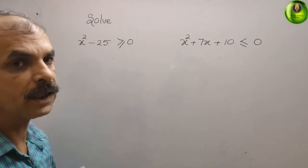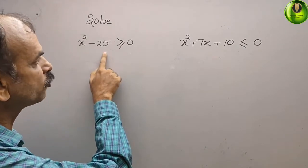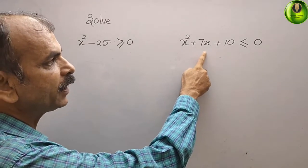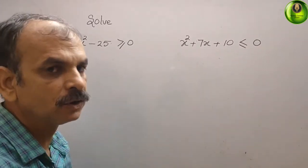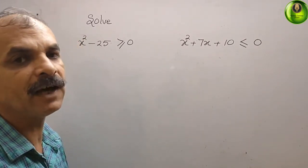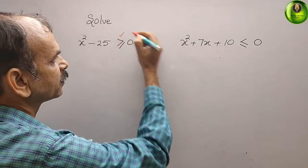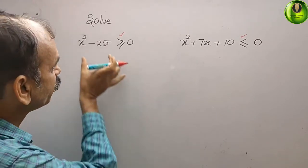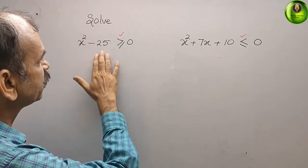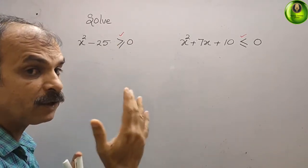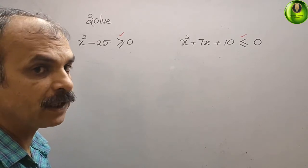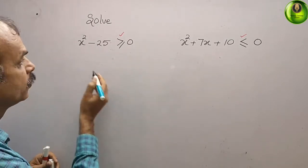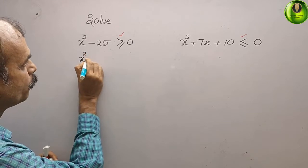Your question is solved. They have given you x squared minus 25 greater than or equal to 0, and x squared plus 7x plus 10 less than or equal to 0. These are inequality signs. For inequalities, what we have to do is first solve and bring this to the equal sign. First, we can see x squared — just make them equal first — so that is x squared minus 25.